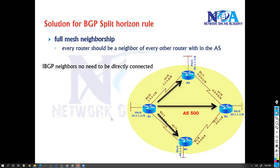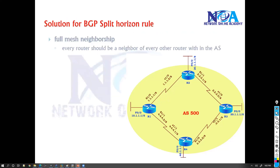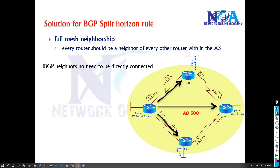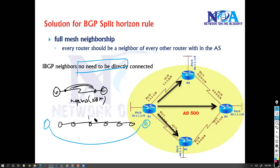In BGP there are plenty of conditions we need to understand, and there are solutions because of these behaviors. In our case we need to make sure we configure full mesh neighbor relationships — if you have four routers, all four must form neighbors with each other. Also, there is no need to be directly connected in BGP. Neighbors are not compulsory to be directly connected. In OSPF, when we talk about neighbors we always talk about directly connected routers — that's what we learn in OSPF or EIGRP.